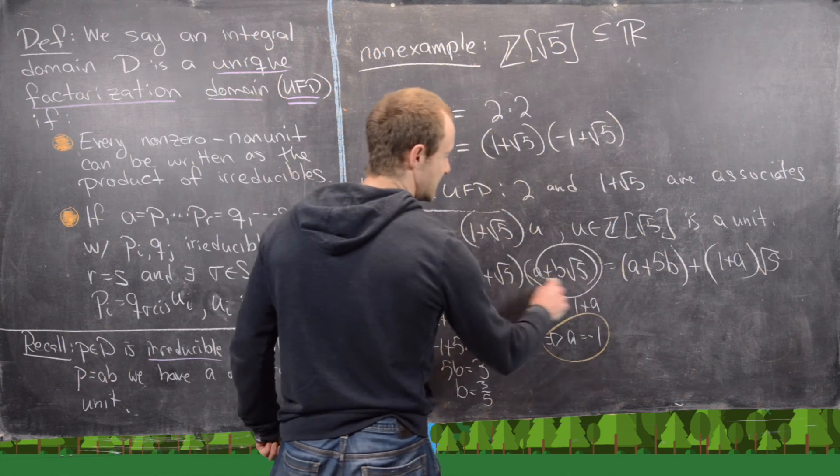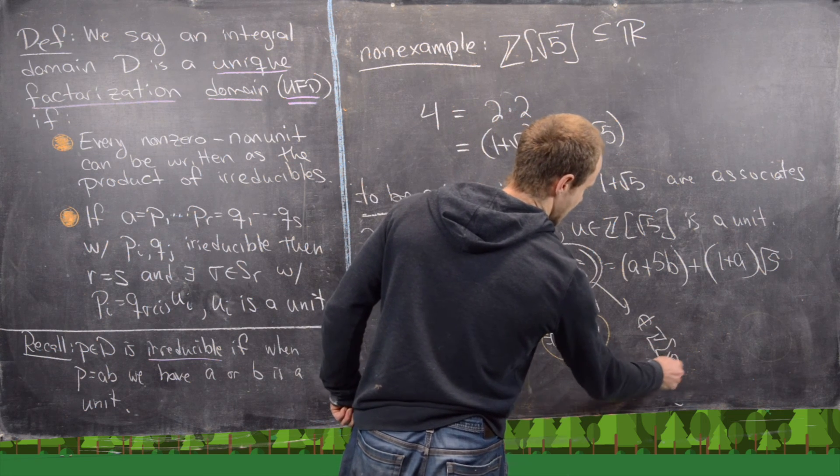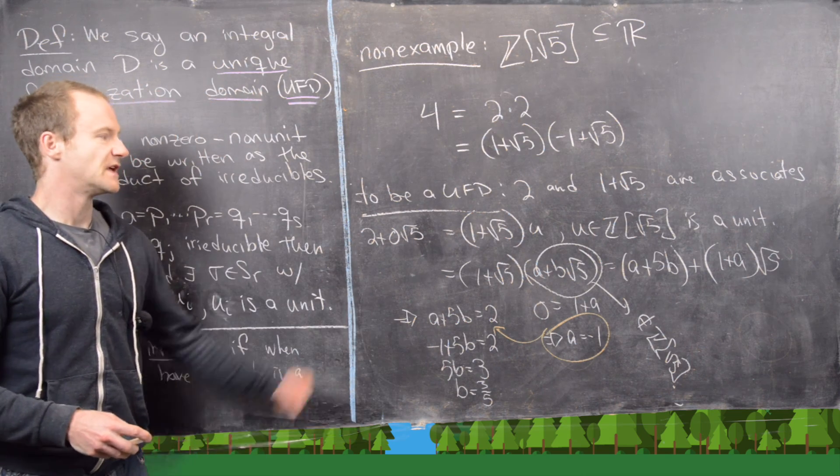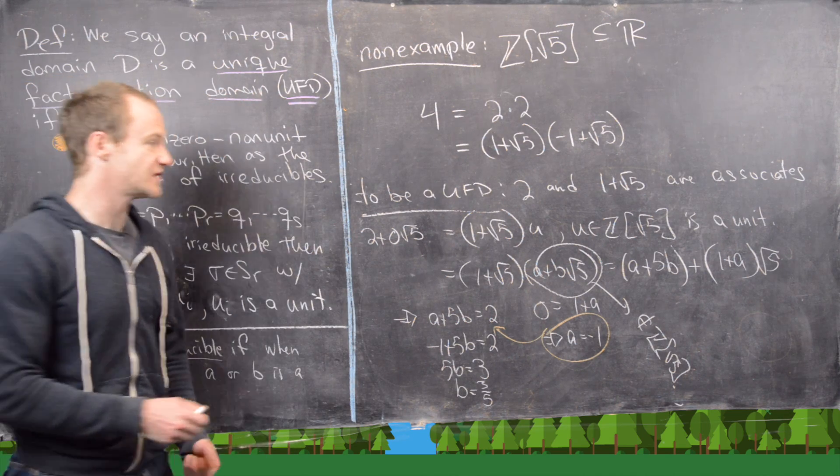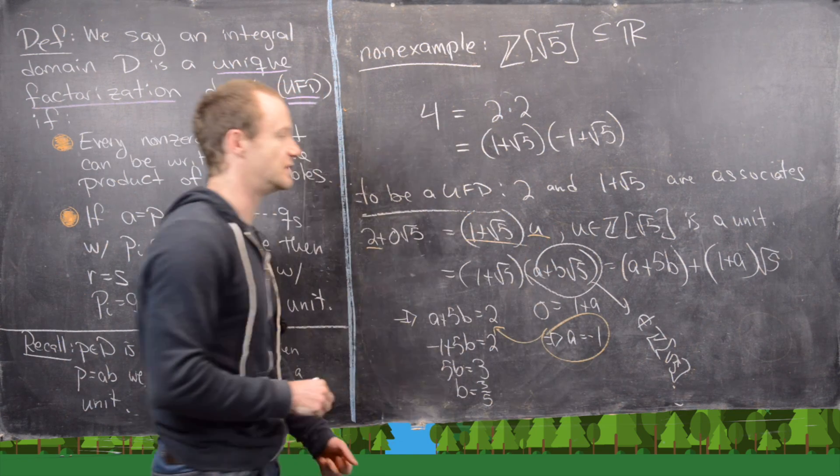But now that means that this guy is not an element of Z adjoin root 5. So it's not an element from that.